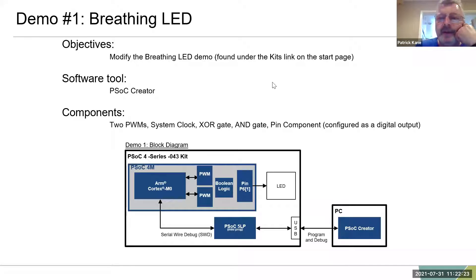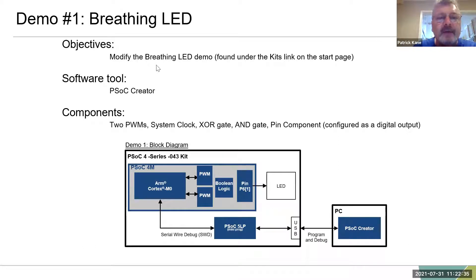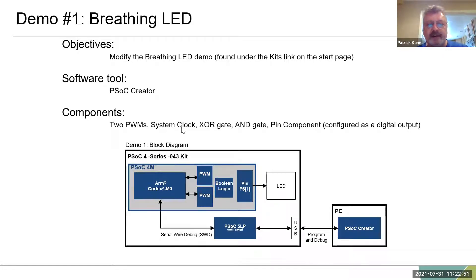What I want to do now is look at the breathing LED demo. If you loaded the kit package, it'll be on the start page under Kits. In PSOC Creator the components used are: two PWMs, a system clock, an XOR gate, and a pin component which is a digital output. Your PC runs PSOC Creator, you connect the kit via USB, this is the PSOC 5 which is called the mini-prog, and we just have two commands from the ARM — start PWM1 and start PWM2 — with the XOR gate and the pin.